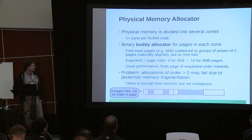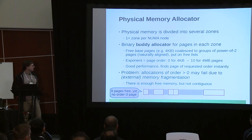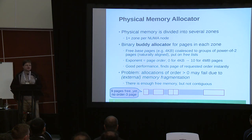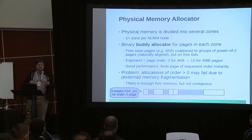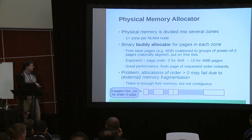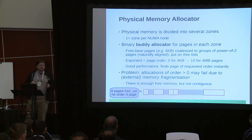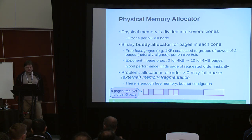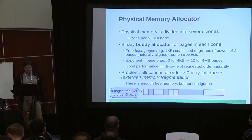Of course it's not so easy, because sometimes high-order pages won't appear on the lists because free memory is fragmented between lots of smaller allocated pages and big pieces. In this case, with 9 pages free but no order-3 page — which should be 8 pages — 16 kilobytes cannot be allocated even though there's more than enough free memory.